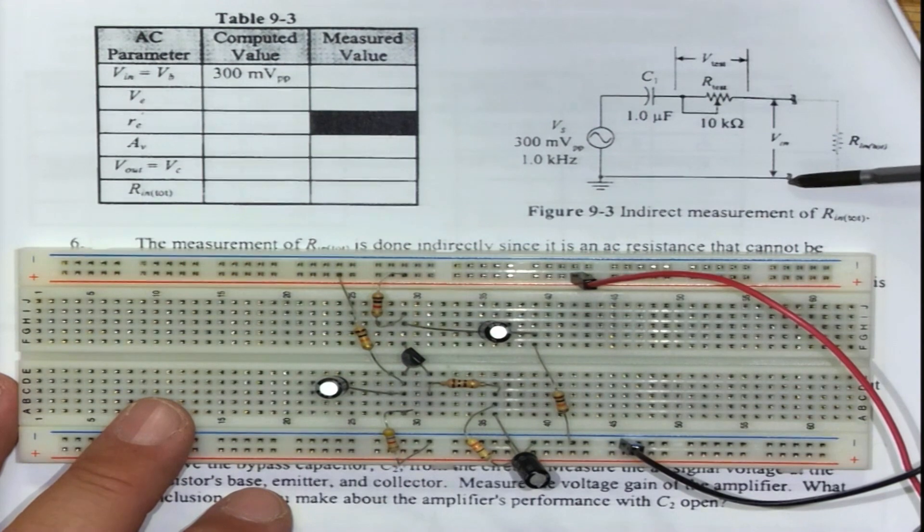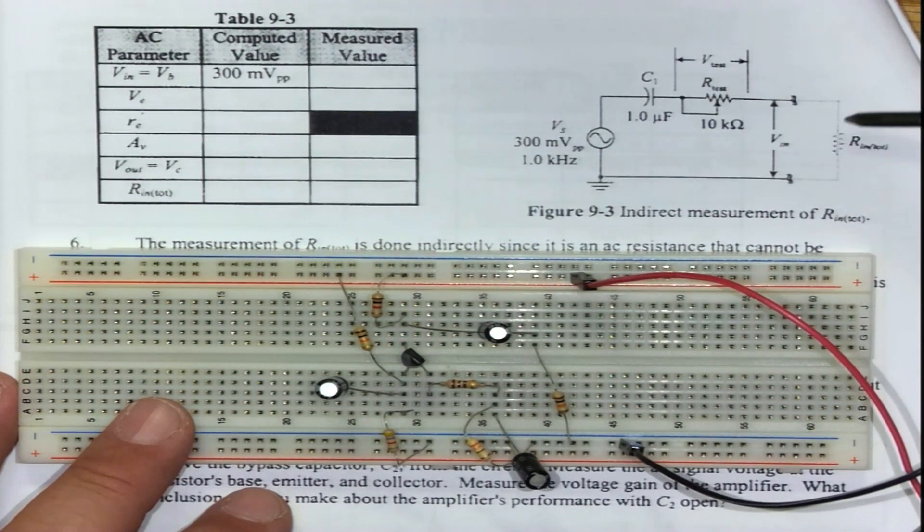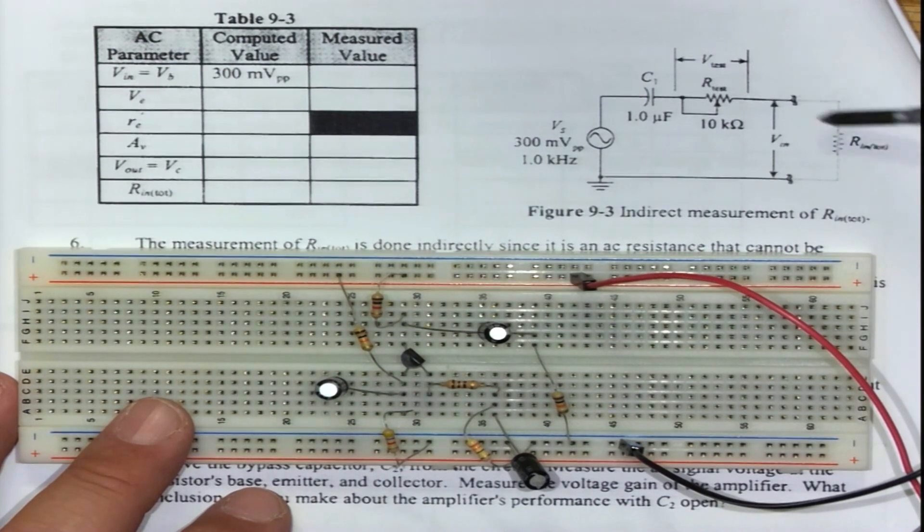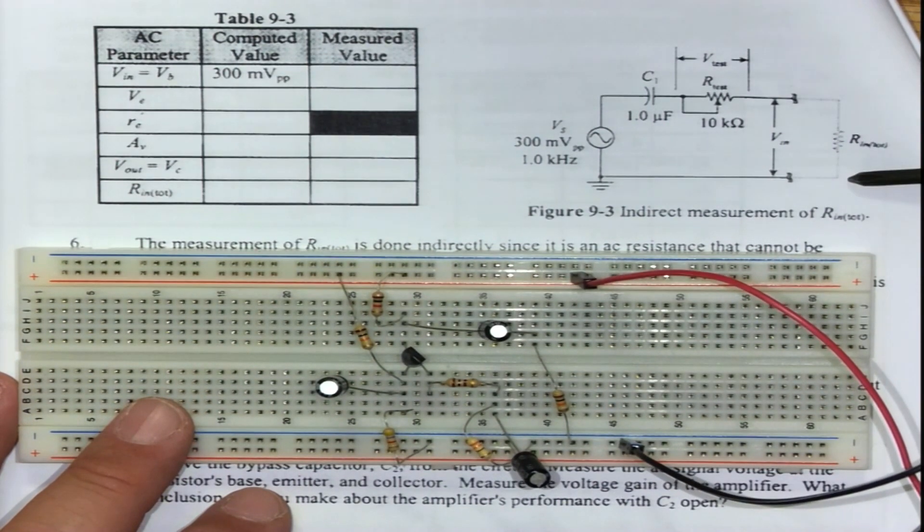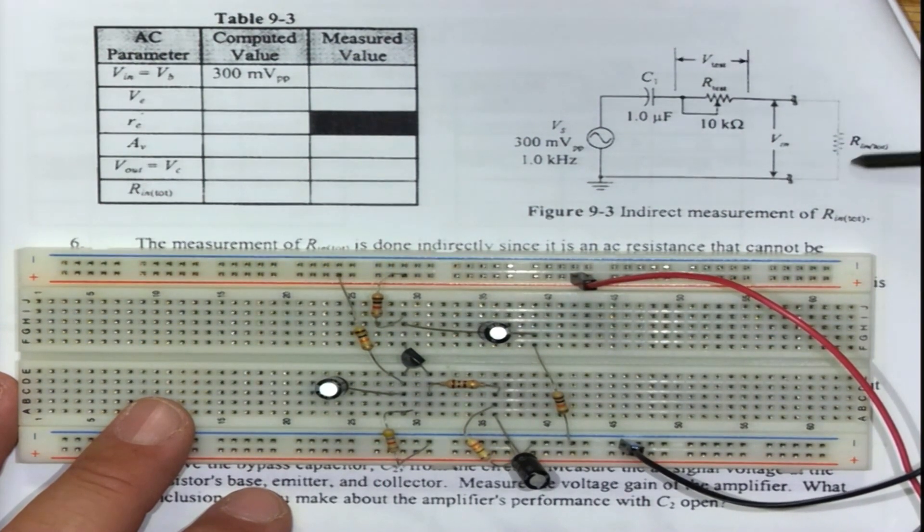We are going to measure a voltage difference across this resistor. We will also know what is the input voltage to the amplifier, and the difference using Kirchoff's law will give me what is the Rin total of that amplifier.